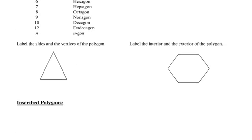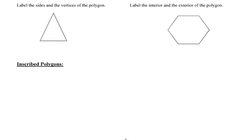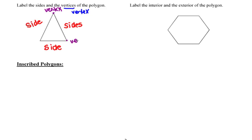A little bit about the anatomy of the polygon. We talk about sides and vertices. Sides are the line segments that make up our polygon, whereas vertices is the plural of vertex, and the vertex is the point where two of the sides come together and meet. It's important to note that the number of sides and the number of vertices will always be equal. So a polygon with three sides will have three vertices, whereas a polygon with ten sides will have ten vertices.